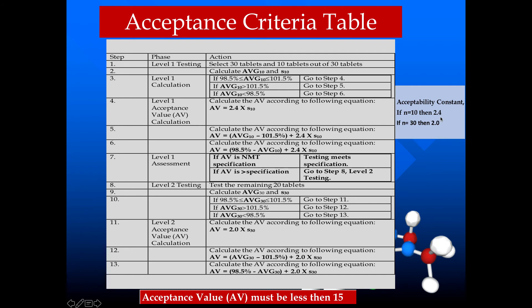In the case where the average assay is more than 101.5%, we have to subtract 101.5% from the average assay of the 10 tablets, and then add this to the product of 2.4 and the standard deviation. In another case, if the average assay of 10 tablets is less than 98.5%, we subtract the average assay from 98.5% and add that to the product of 2.4 and the standard deviation.